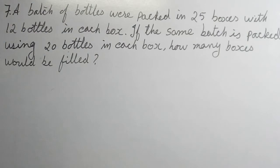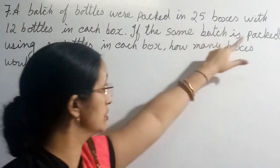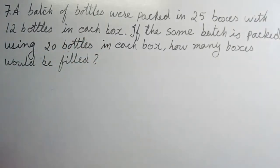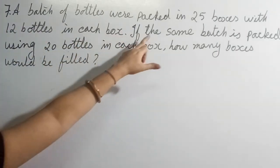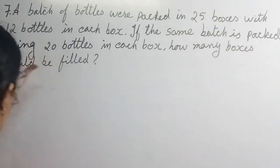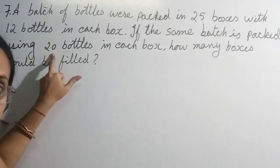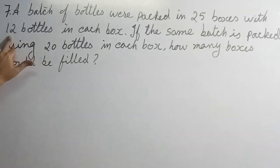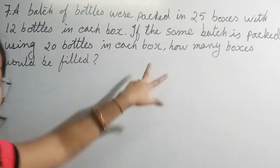A batch of bottles were packed in twenty-five boxes with twelve bottles in each box. A batch means a lot of bottles. If the same batch, meaning the total number of bottles is the same, is packed using a different method, but it has changed the way to pack it. Now we are putting twelve bottles in each box. Now we are putting how many bottles? Twenty bottles in each box.